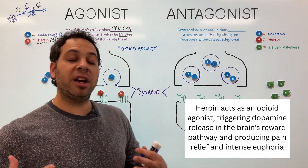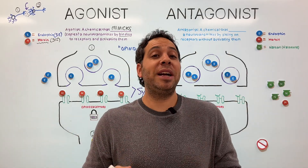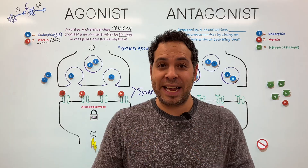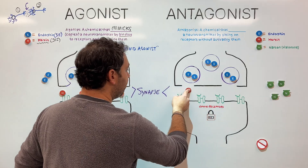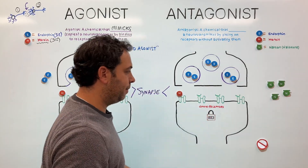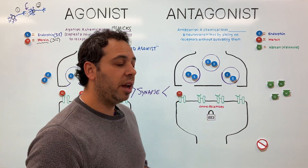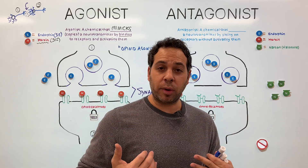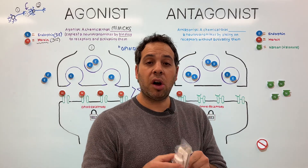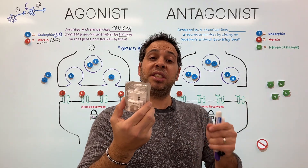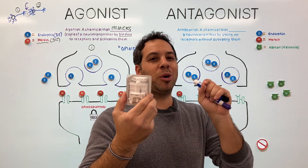So there we go — an agonist is a drug that mimics or copies, having the same combination to activate those receptors. That begs the question: what is an antagonist? Let's make this a real-world scenario. Imagine somebody took too much heroin — heroin binding to the opioid receptors because it has the same key. This person has had an overdose. They took too much, overstimulated those opioid receptors, their breathing has stopped, they've lost consciousness. You hope that someone has something called Narcan or Naloxone, a nasal spray used to reverse that overdose.